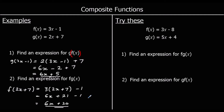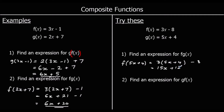Two for you to try. The first question: find an expression for fg of x — putting g into f. So it's f of (5x plus 4), which is 3 times (5x plus 4) minus 8. Expanding: 3 times 5x is 15x, 3 times 4 is 12. So we've got 15x plus 12 minus 8, which is 15x plus 4.